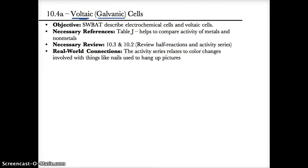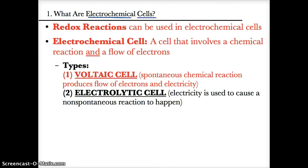This lesson covers 10.4A: voltaic or galvanic cells. Let's first discuss a new term known as electrochemical cells. Redox reactions, as we've been learning in this unit, can actually be used in a practical way — specifically, for something called electrochemical cells.